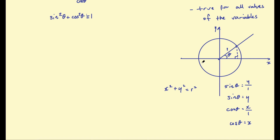In this case, the radius for the unit circle is 1. X is cosine theta and sine theta is y. So we can write this as cosine squared theta plus sine squared theta equals 1, r squared being 1. So that's one proof of this identity — sine squared theta plus cosine squared theta equals 1. This should be true for all values of theta, which is what makes it an identity.